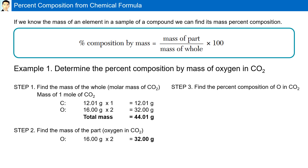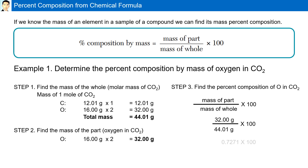Step 3 is to find the percent composition of oxygen in carbon dioxide, where we use the mass of the part divided by the mass of the whole multiplied by 100. The mass of the part is 32, the mass of the whole is 44, multiplied by 100. Our final answer is 72.71%. So, 72.71% of the molecule CO2 is made up of oxygen.